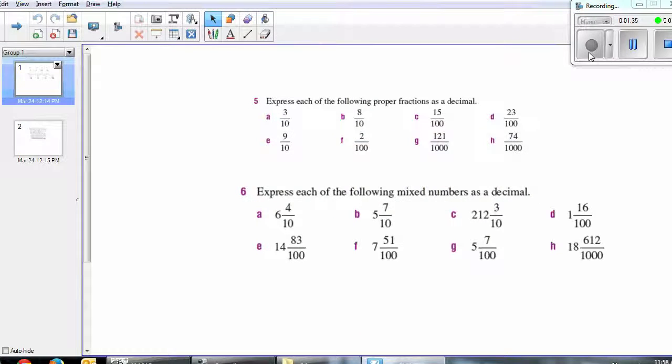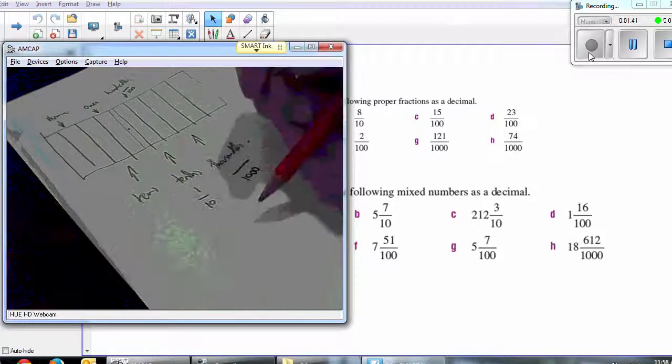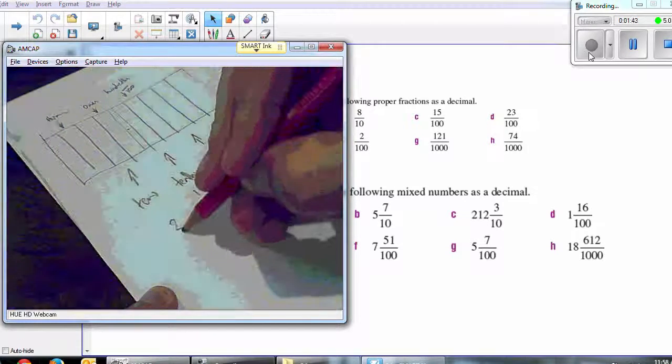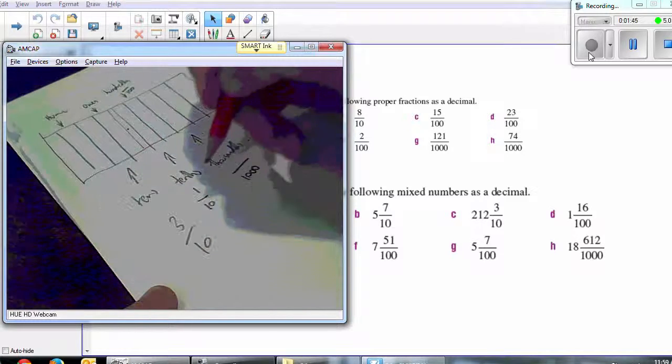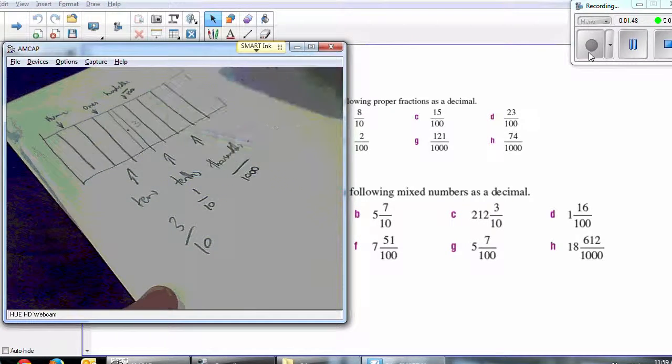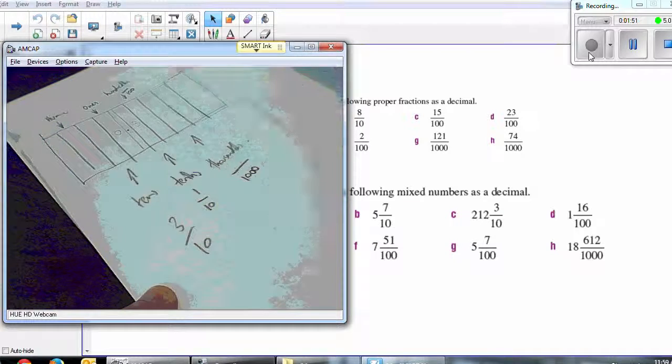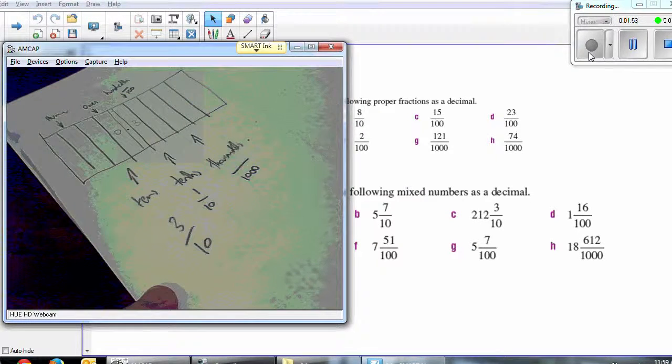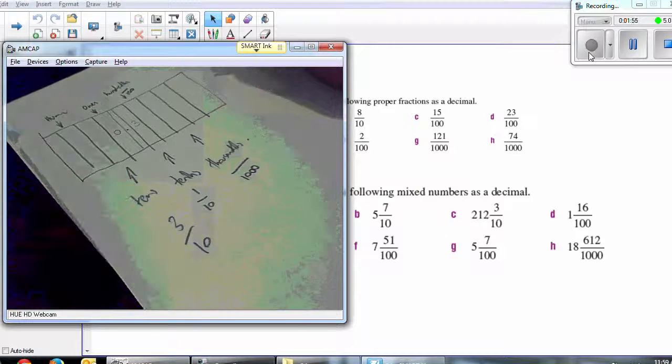If we have a look at question five, it says express each of the following proper fractions as decimals. So it gives us three tenths. Now, tenths are here in this column. All I'd need to do is put my three in there, and obviously a zero there, and it gives me my answer. Pretty simple stuff.